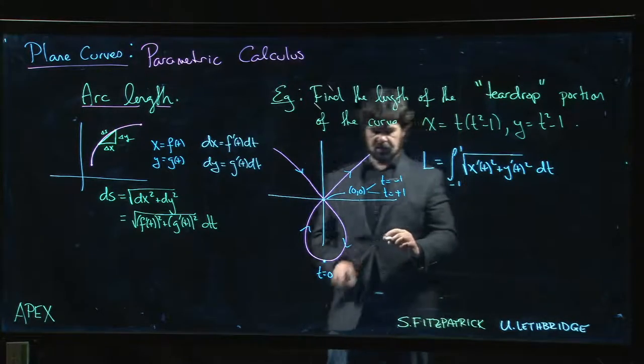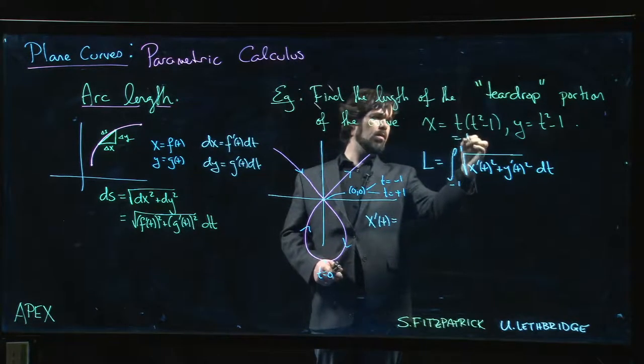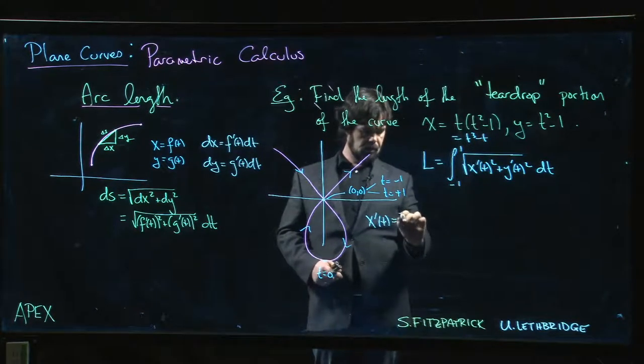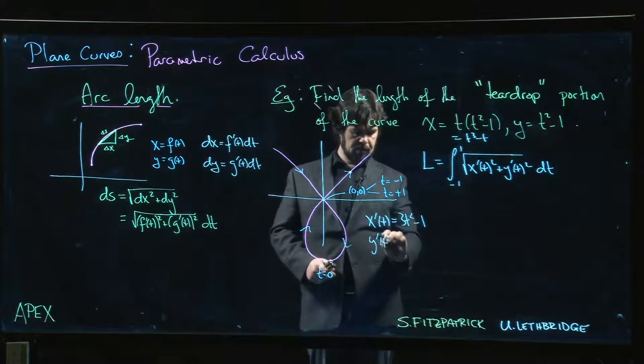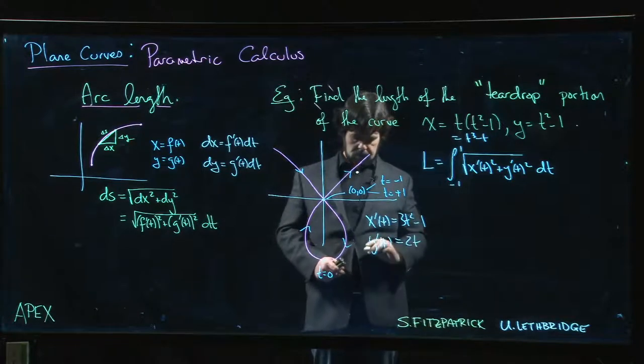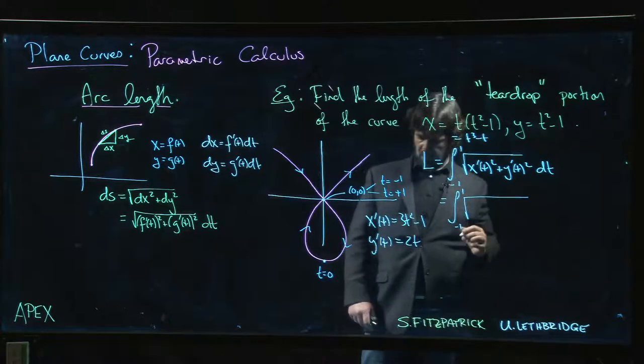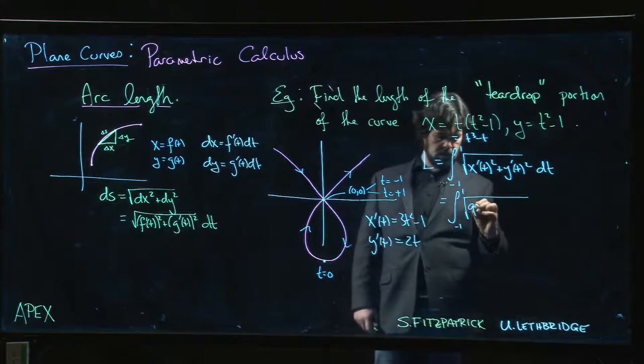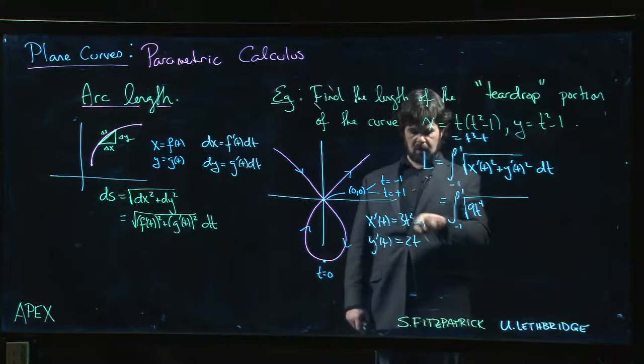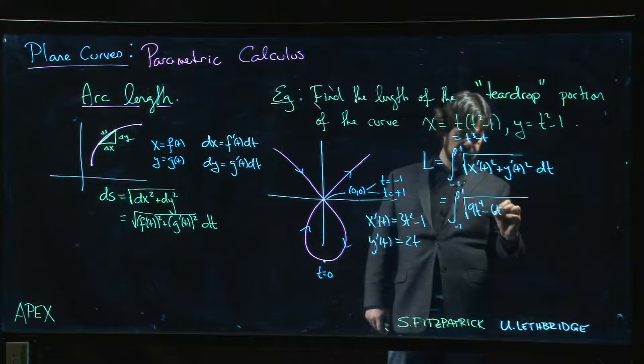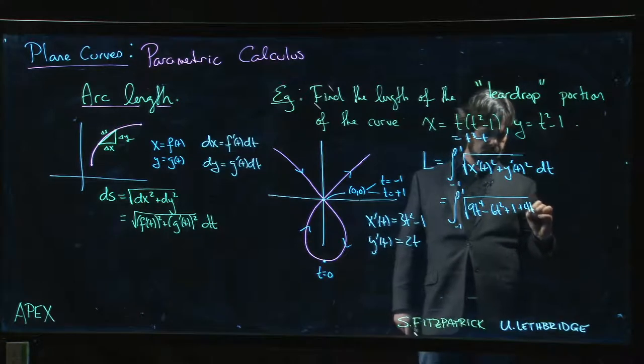Okay so we have to go and actually calculate these things. So x'(t), now don't do product rule, that's t³ - t, so we get 3t² - 1. Y'(t) is 2t. Okay so what I get is from minus one to one, so x' squared, I get when I square that thing I get 9t⁴, cross term is going to be -6t², plus another 3t², I get -6t² + 1. And then I got to add in the y squared, I get 4t².